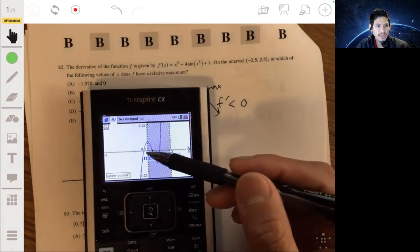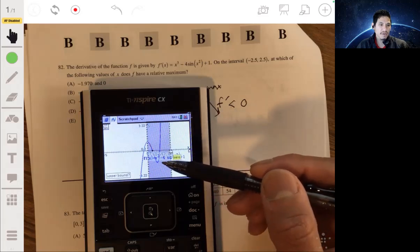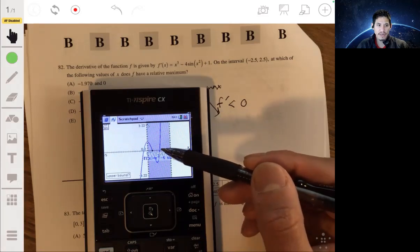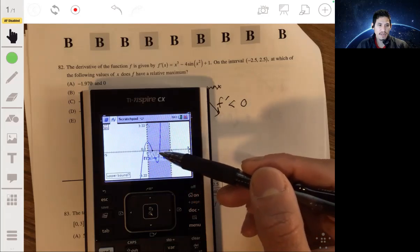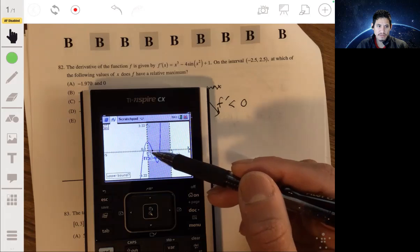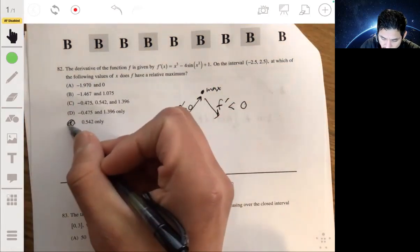We're looking for when the derivative changes from a positive value to a negative value. We don't care about this zero or that one because it's going from negative to positive there. We only care about this one, so our answer is E: 0.542 only.